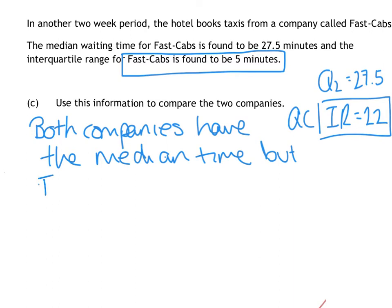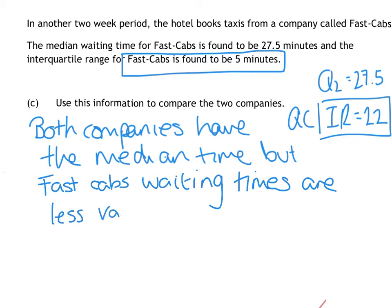But because the second company, Fast Cabs, has a lower semi-interquartile range, it means that their waiting times are a lot closer together. It's very like your standard deviation sentence. The lower the quartile range, interquartile range, semi-interquartile range, standard deviation, whatever you're talking about, the lower it is, the closer together the times are. So Fast Cabs waiting times are less varied. You could spin that the other way and say that Quick Cabs waiting times are more varied, and the reason is because that had a higher interquartile range.